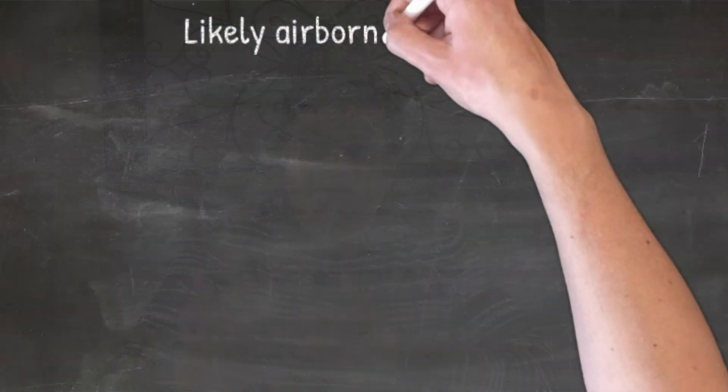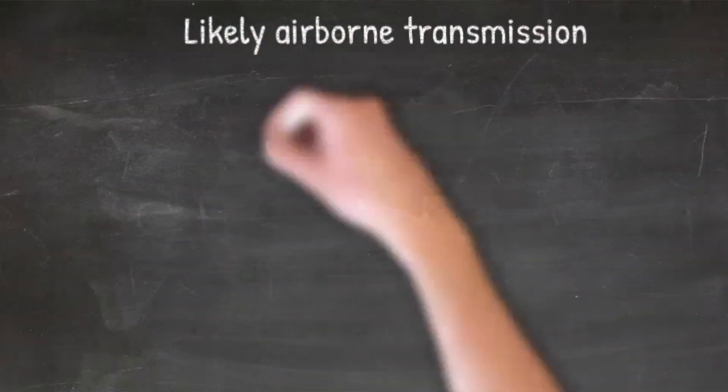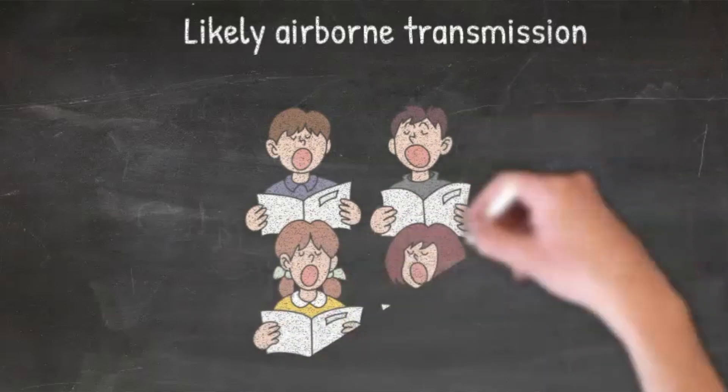A real-world example of airborne transmission occurred here in the US in early March in the Seattle, Washington area. Around 60 people were part of a choir, and within two to three weeks of their choir meeting, around 45 people were diagnosed with COVID-19 or had symptoms. Three were hospitalized and unfortunately two people passed away.